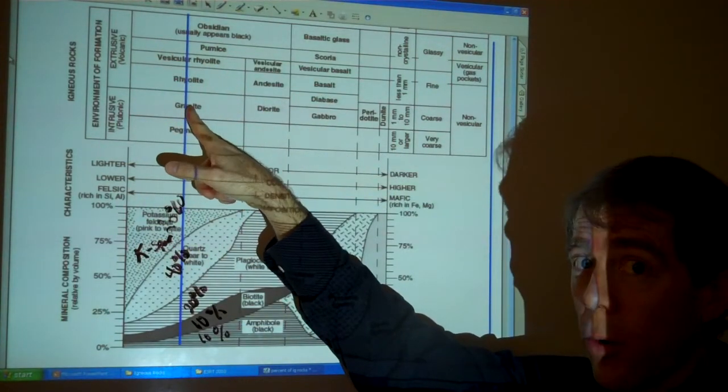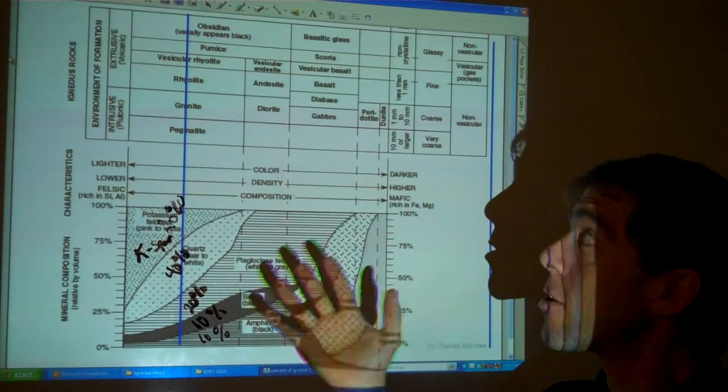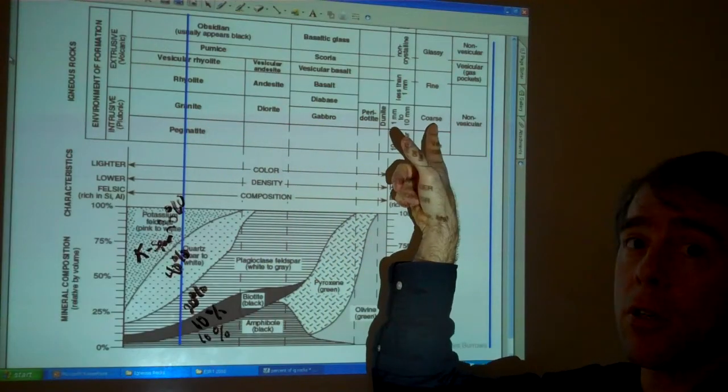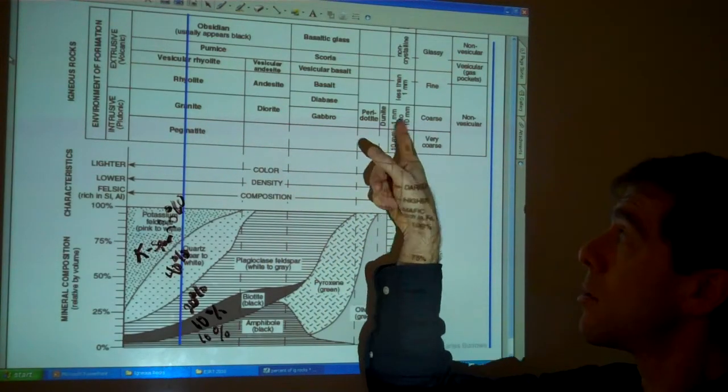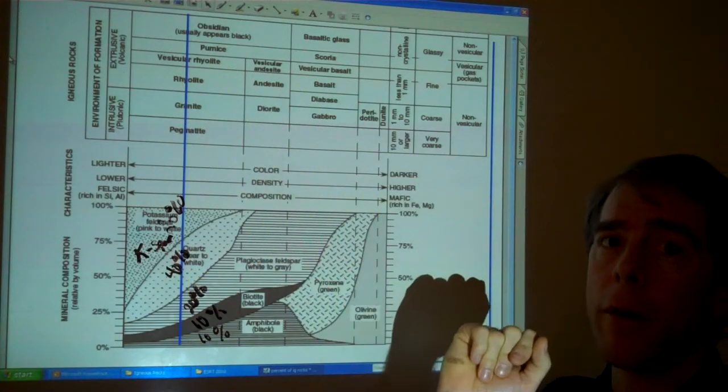The second part of the question would be, well, what's it look like? What are the size of the crystals? The crystal size determines everything else. So if it has coarse crystals, coarse grain, 1 to 10 millimeters, then I know it's in this row, and it's got these minerals in it, it's a granite.